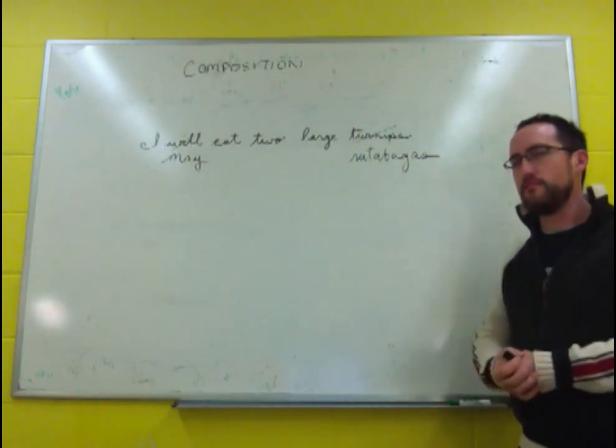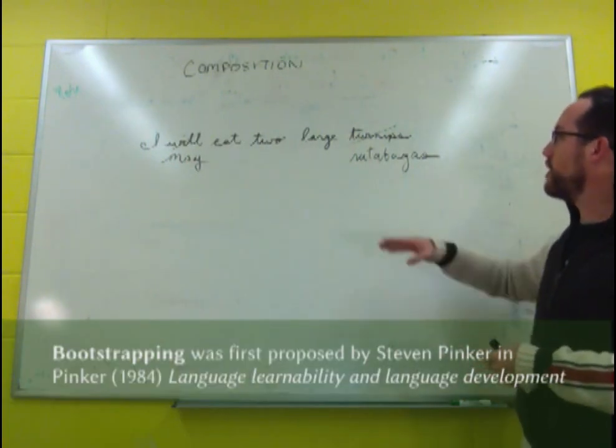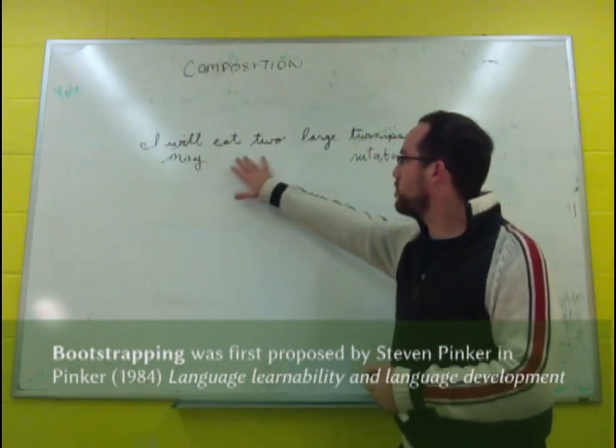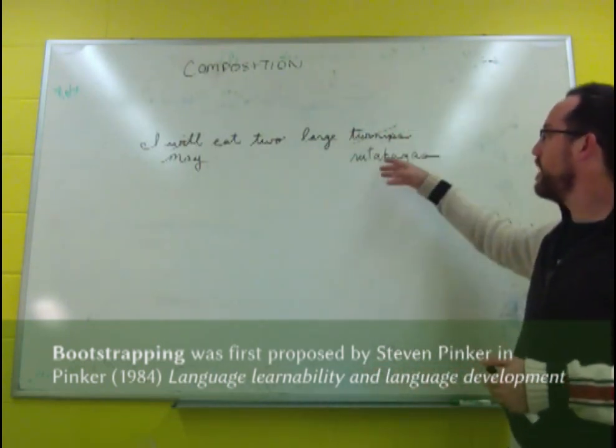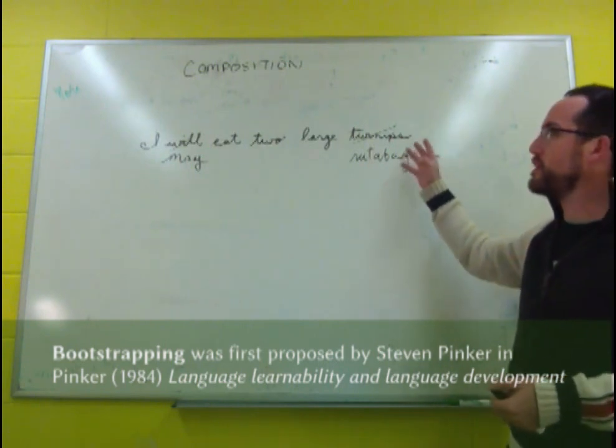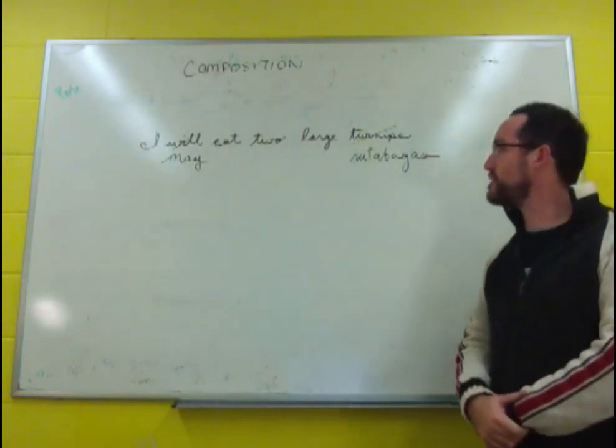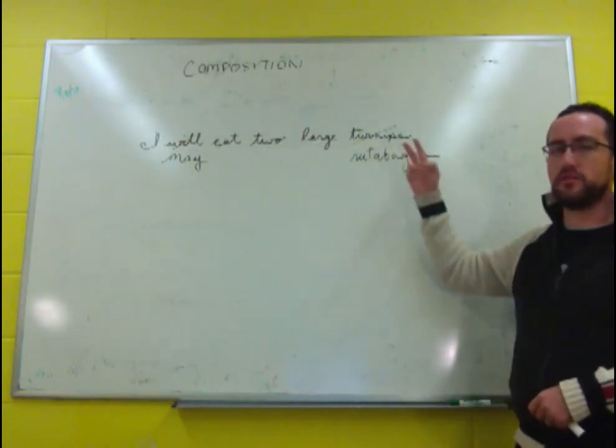Children also use that mechanism under what's called semantic bootstrapping, where they understand, I will eat two large something, and they hear this new word, turnip. Based on the meanings of the rest of the sentence, it helps them figure out what turnips are.